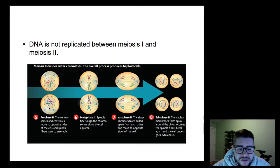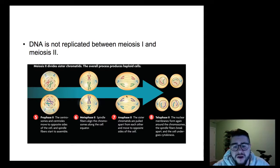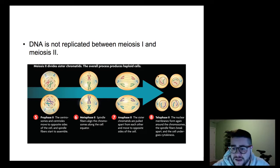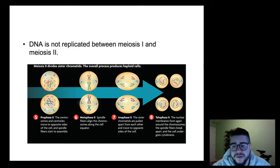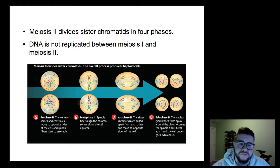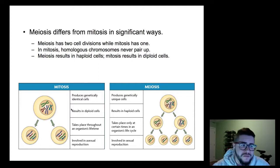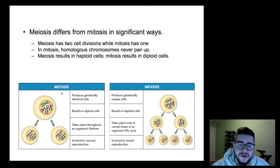Then that cell splits again. Prophase two, metaphase two — lines up in the middle. Anaphase two — the sister chromatids separate, so the left and right halves of the X. Then telophase two makes the nuclear envelope for all four cells. What we have at the very end are four genetically unique cells, because of crossing over and because of independent assortment.